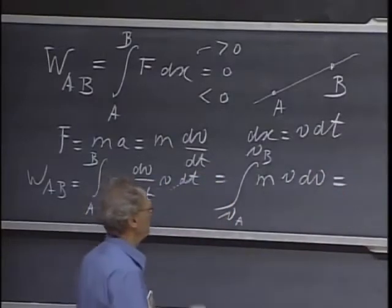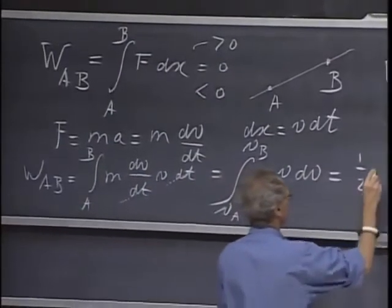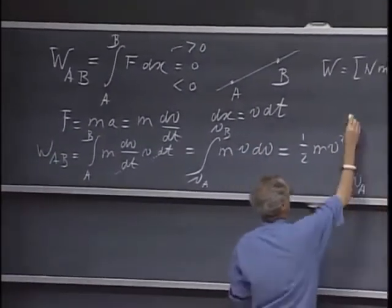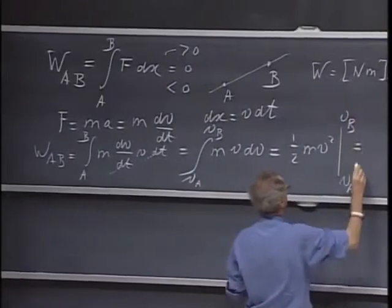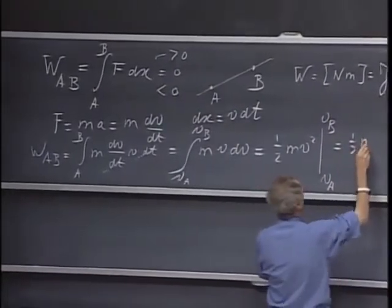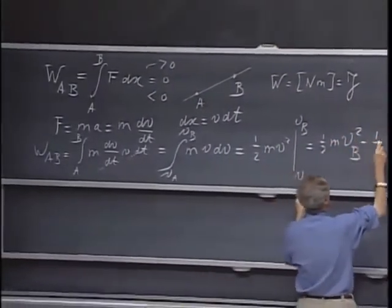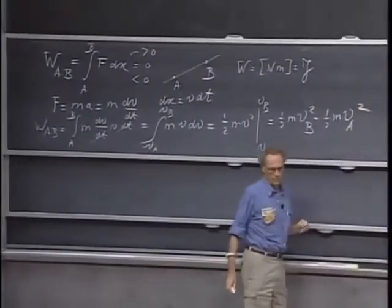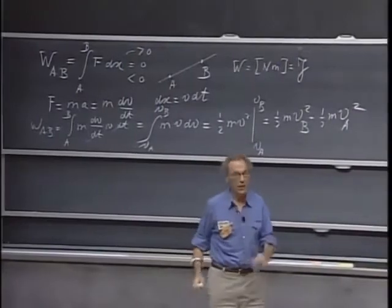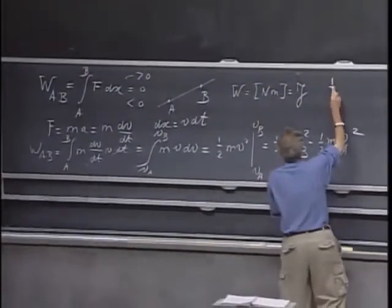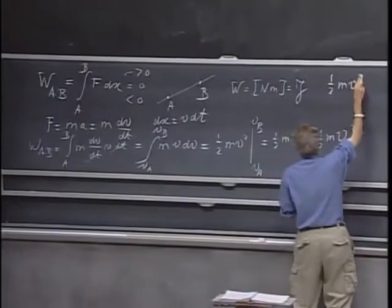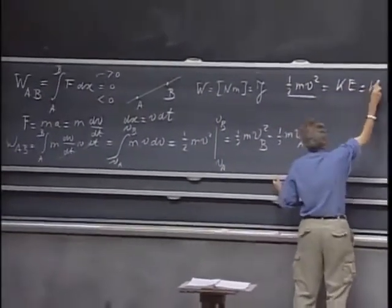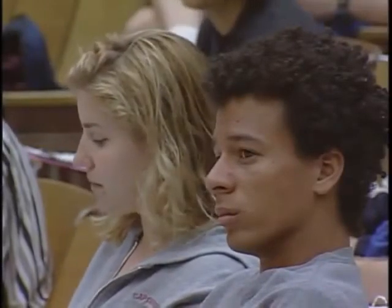That's a very easy integral. That is one-half mv squared, which I have to evaluate between vA and vB, and that is one-half mvB squared minus one-half mvA squared. One-half mv squared is what we call in physics kinetic energy. Sometimes we write just a K for that. It's the energy of motion.